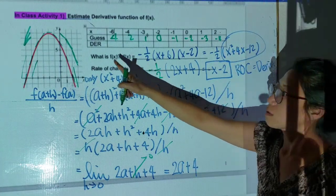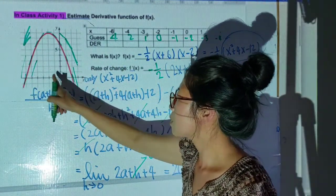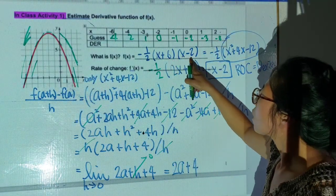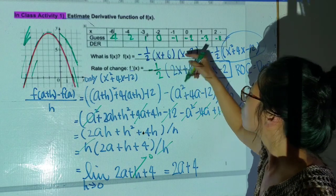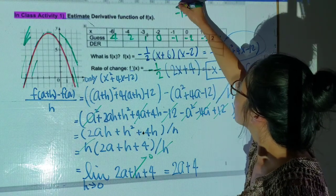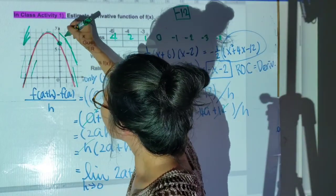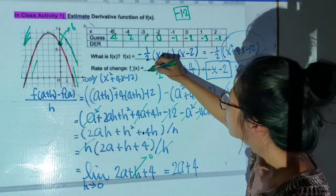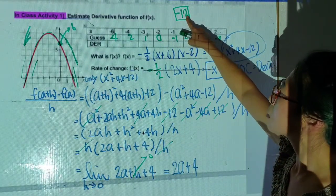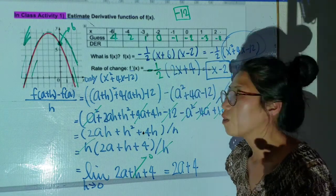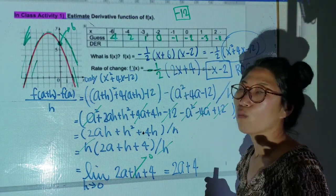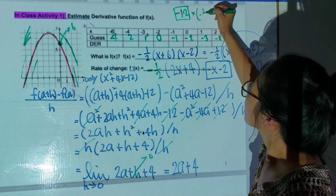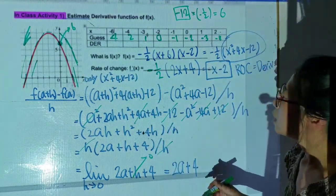Did you find the function? The y-intercepts are at -6 and +2. When I plug in for the y-intercept with this function, I get -12. But I have my y-intercept as -6. Do you see that my graph is concave down, so I need a negative sign? To make -12 become -6, my leading coefficient must be -1/2.